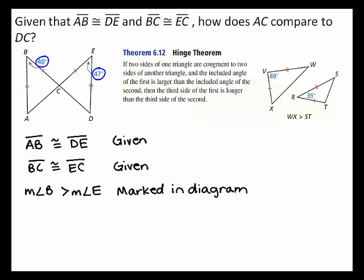The hinge theorem states that if two sides of one triangle are congruent to two sides of another triangle and the included angle of the first is larger than the included angle of the second, then the third side of the first is longer than the third side of the second.